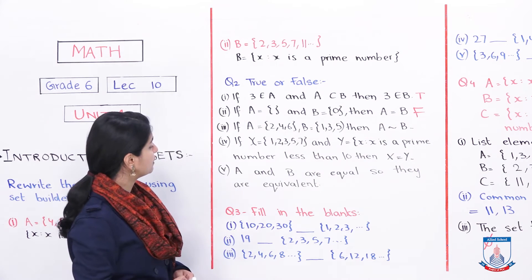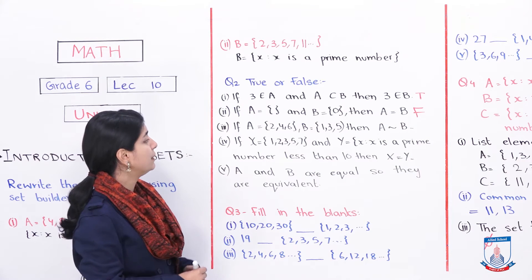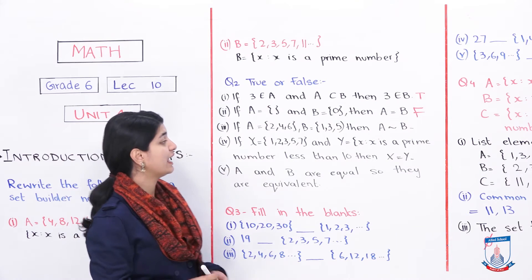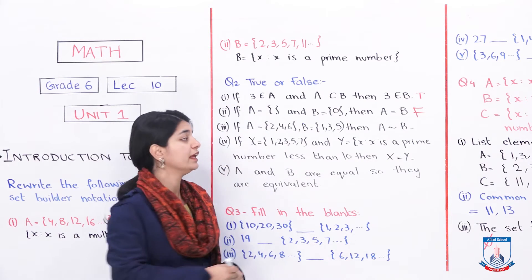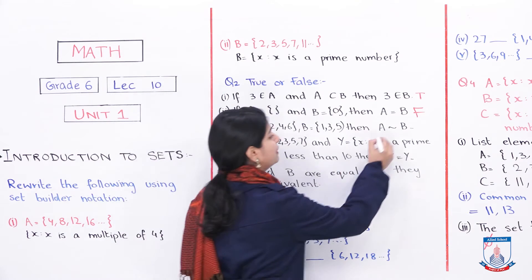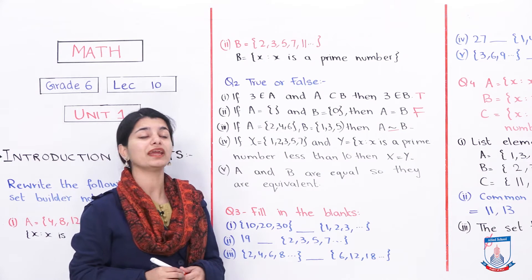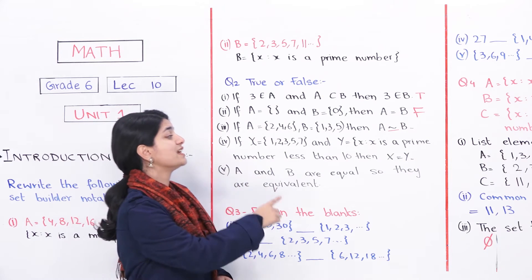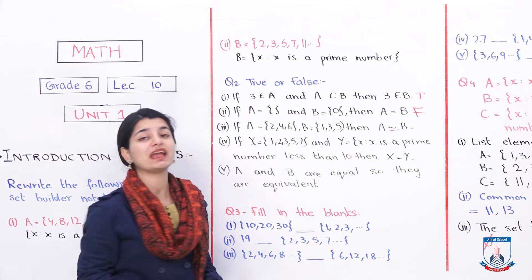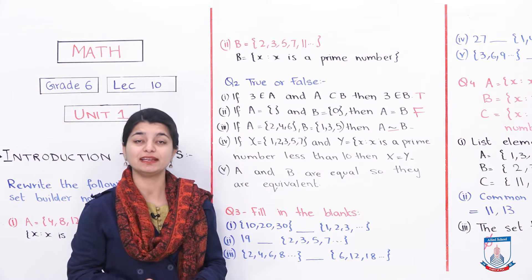Third statement: if A equals {2, 4, 6} and B equals {1, 3, 5}, then A is equivalent to B. Both sets have 3 elements each. Equivalent sets have the same number of elements, so this is true — A and B are equivalent sets.